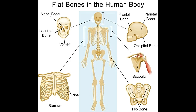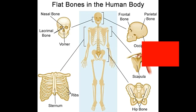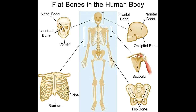List of flat bones. Flat bones are broad bones that provide protection or muscle attachment. These bones are expanded into broad, flat plates, as in the cranium, skull, hip bone, pelvis, sternum, rib cage, and scapula. The flat bones of the human body include: Occipital, Parietal, Frontal, Nasal, Lacrimal, Vomer, Scapula, Os Coxa (Hip Bone), Sternum, Ribs.